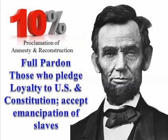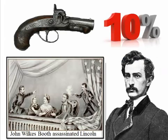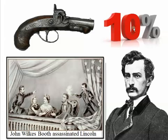A lot of people thought this was too lenient a plan — that Lincoln's Presidential Reconstruction was too easy on the South. However, as we know, Abraham Lincoln did not get a chance to carry out his Reconstruction plan, because in 1865, John Wilkes Booth assassinated Lincoln in Ford's Theater, and in the process, assassinated his 10% Plan.